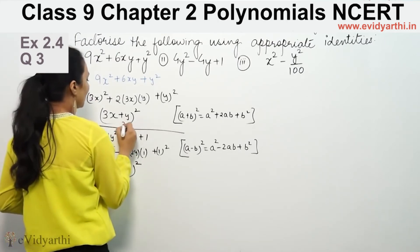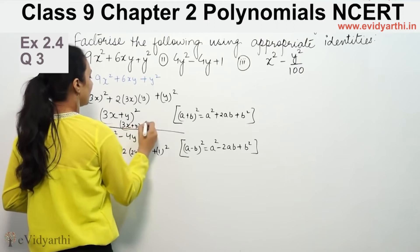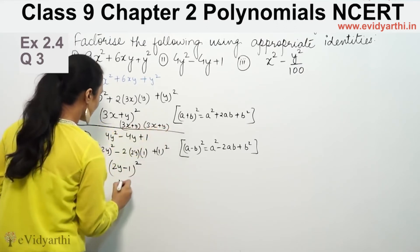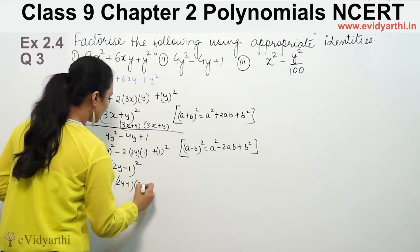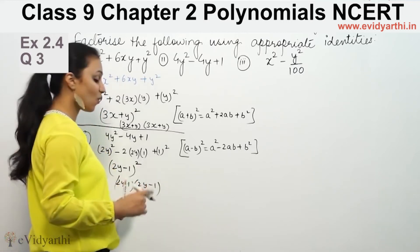So this one we can write (3x+y)(3x+y). This one we can write (2y-1)(2y-1). Because square is two times.